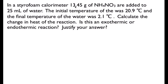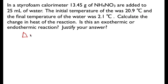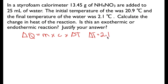Let's try one more. In this case, we have ammonium nitrate in a styrofoam calorimeter — 13.45 grams — put into 25 milliliters of water. The initial temperature of the water is 20.9°C and the final temperature is 2.1°C, so the temperature went down. We want to know the change in heat and whether it is exothermic or endothermic. Delta Q for the water equals M times C times delta T. Delta T equals the final temperature minus the initial: 2.1 minus 20.9, which equals −18.8°C.